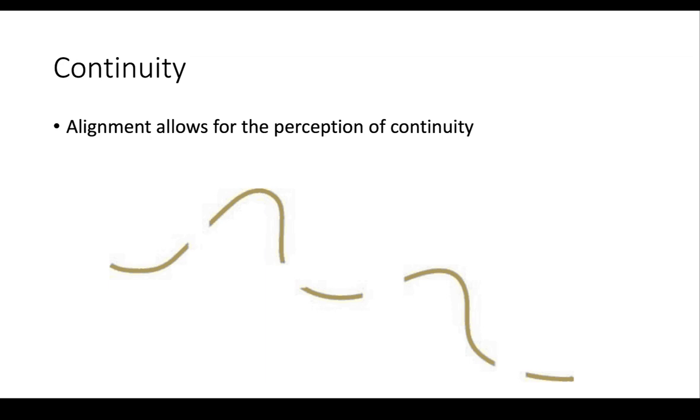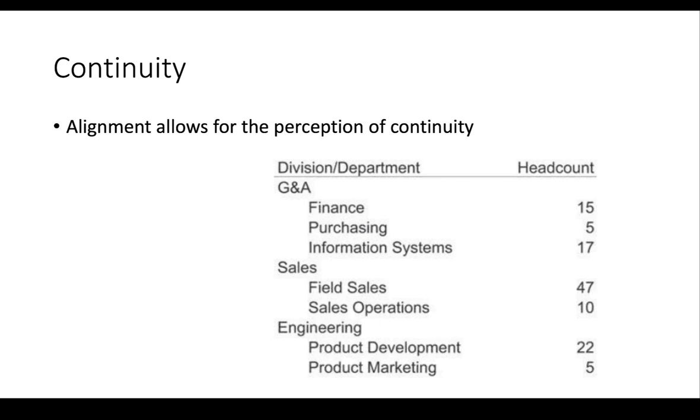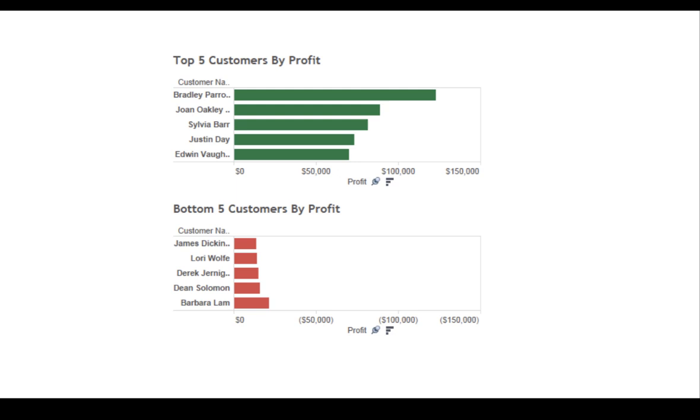Now, one gestalt principle that you might not realize that you've used for your whole life is alignment. When we align things, we create the perception of continuity. And you've done this many times by making nested tables like this, where you've said, based upon alignment, these things are at one level, or these things are together. And so when we're creating our dashboards, when we line things up, we're going to create the perception of them being the same.